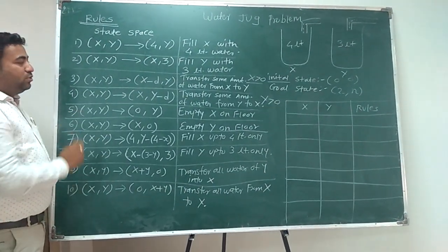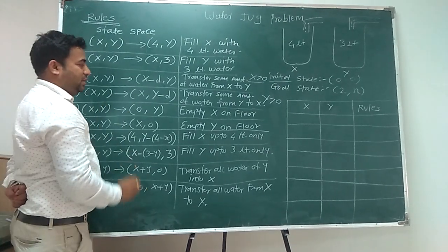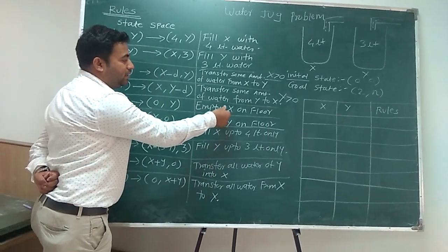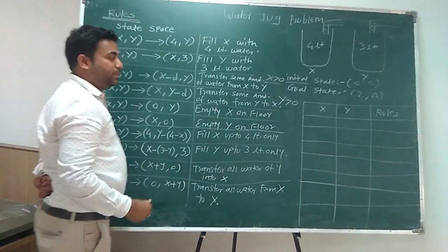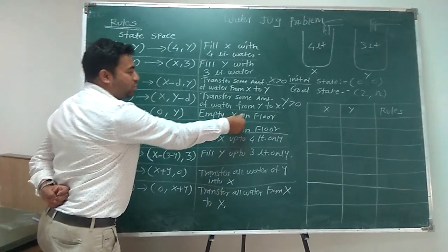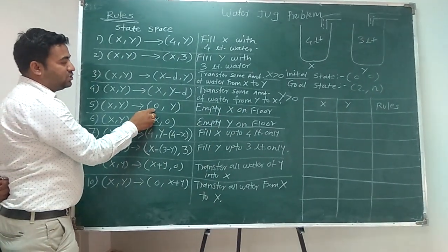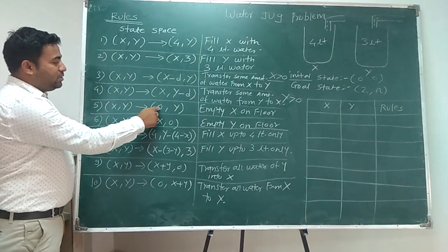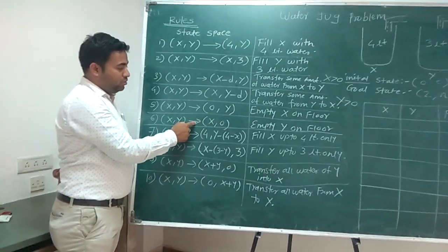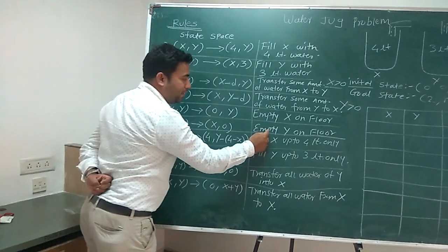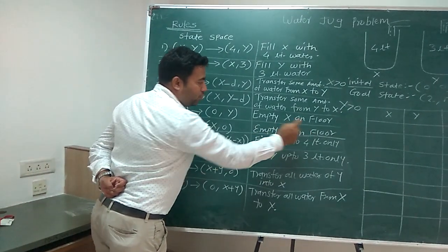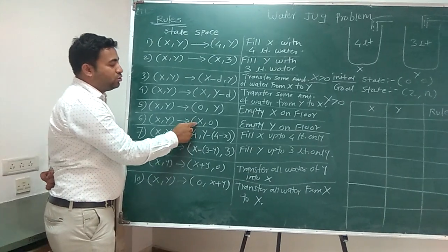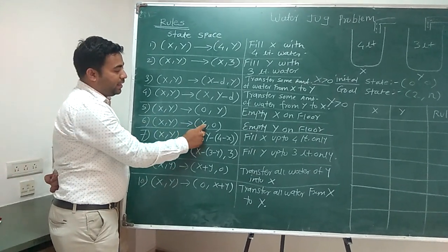Rule 5 says: empty jug x on the floor. When we empty jug x, the value of x becomes 0 and y remains as it is. The same logic applies for rule 6: empty jug y on the floor, making the value of y equal to 0, while x retains its value, giving state (x, 0).